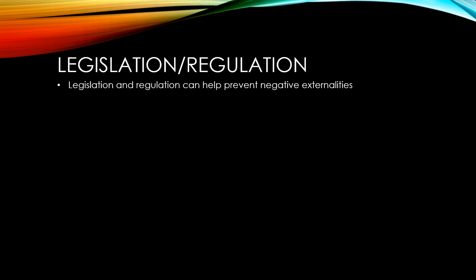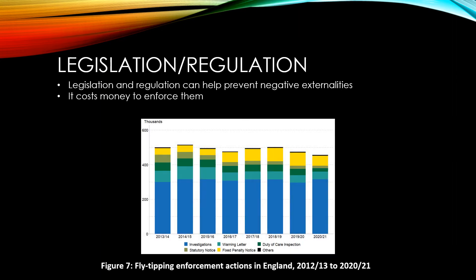Legislation and regulation can definitely help to prevent negative externalities. However, it costs a lot of money to enforce them. In some areas it's been very difficult to do — for example, fly tipping has become an increasing problem and it's very difficult to secure a conviction. Any legislation and regulations introduced can only be as effective as the ability to enforce them.